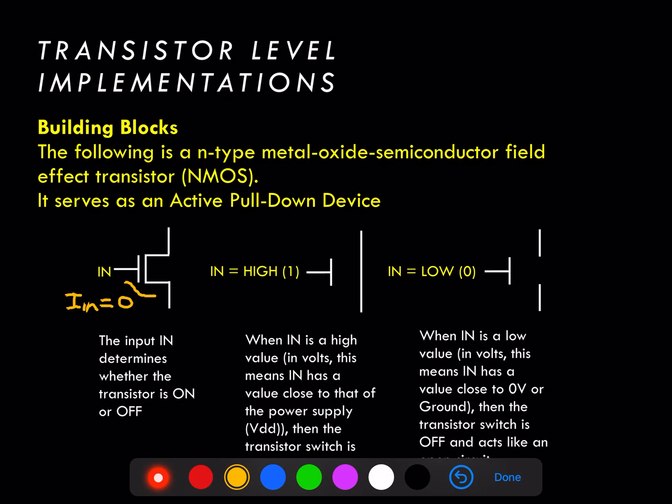The transistor itself, when used in digital logic gates, is used in an active pull-down mode — that's a function of the device physics or the limitations of the transistor. It's best suited to pulling down an output node to zero rather than pulling the output node up to the power supply or to a one value. The NMOS transistor, when it operates as a switch, becomes a short circuit when the input value to the transistor is high or a one. In that case the output nodes of the transistor are connected via a wire and the transistor acts like a short circuit or a switch in the on position.